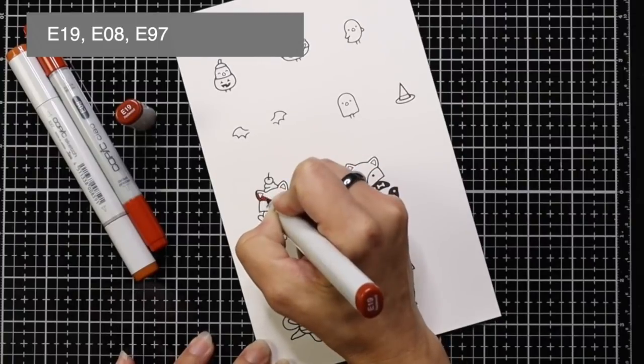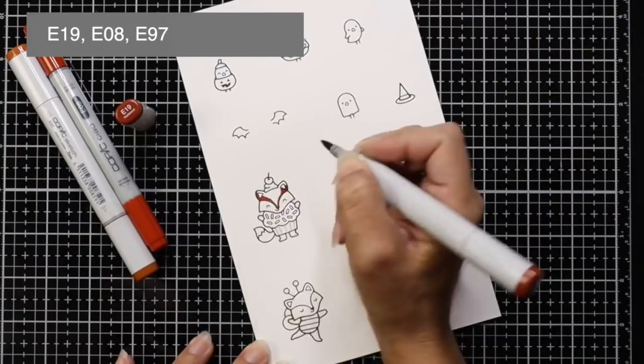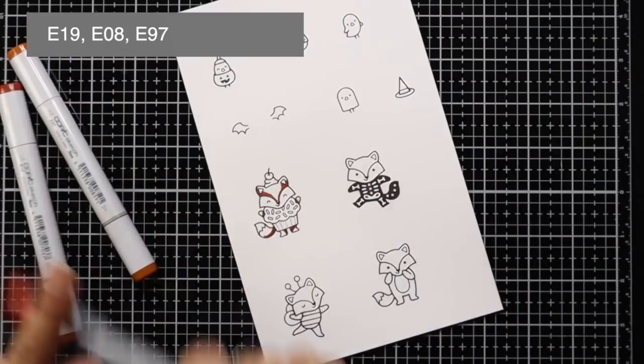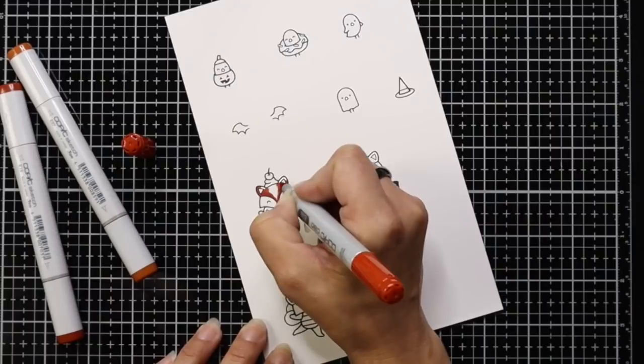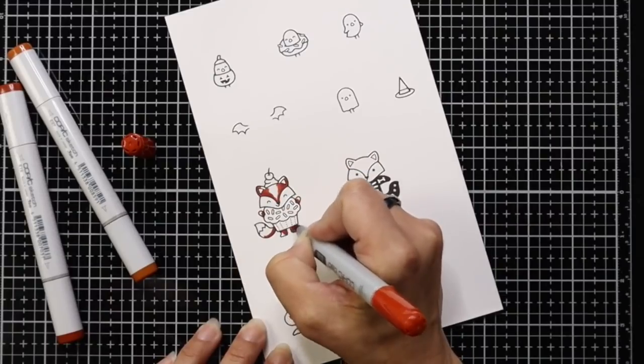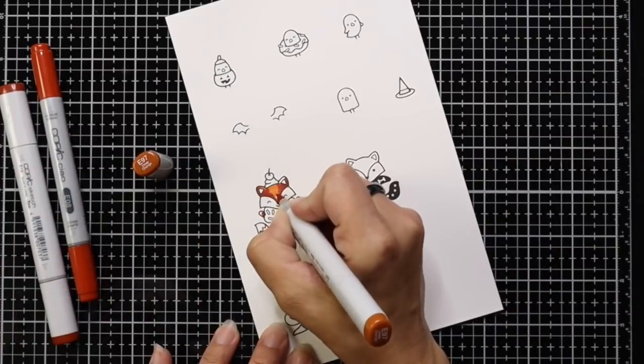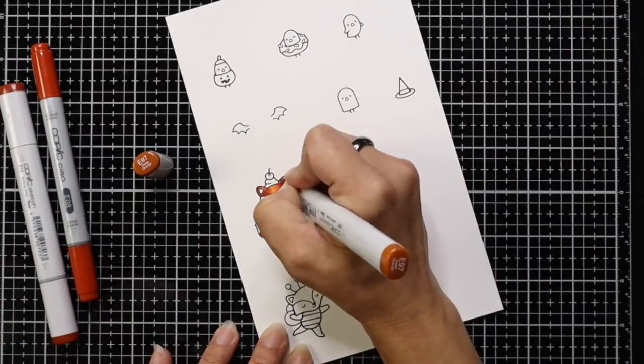So for the fox, I'm going to use E19, E08, and E97. Like usual, I will have all of the colors I'm using listed at the very top of the screen, and I'm going to use this same color combination for all four of the fox images that I have in these adorable costumes.